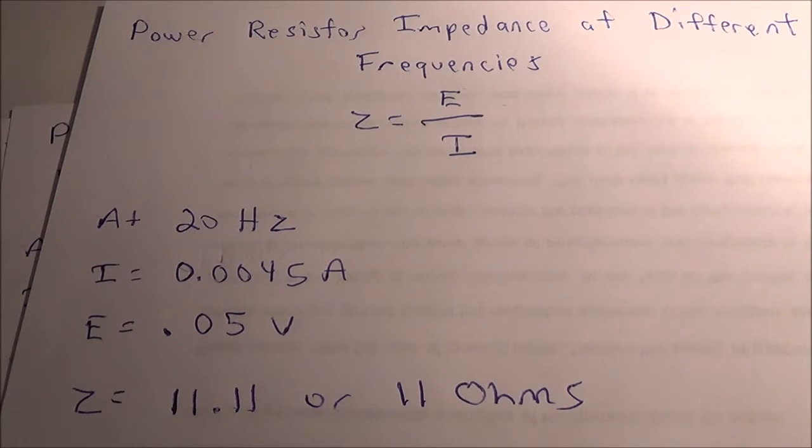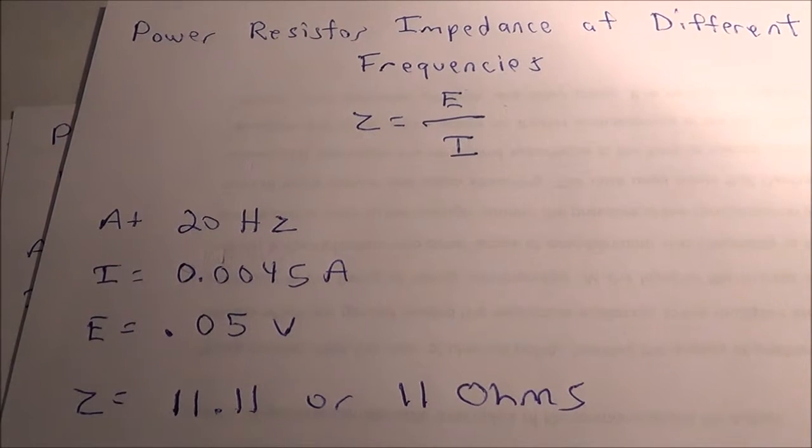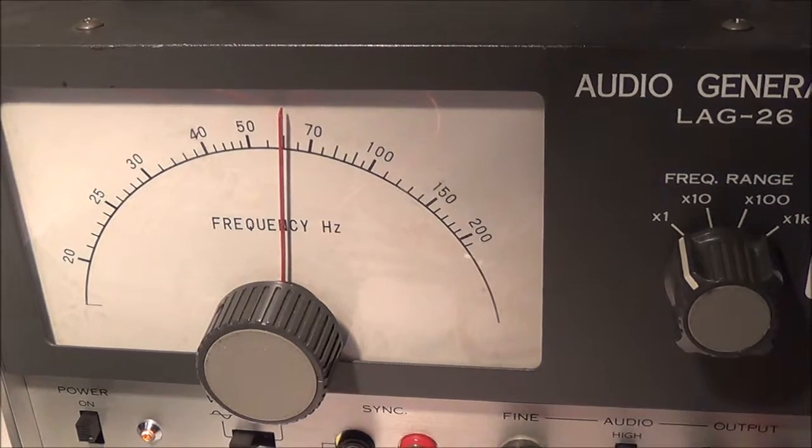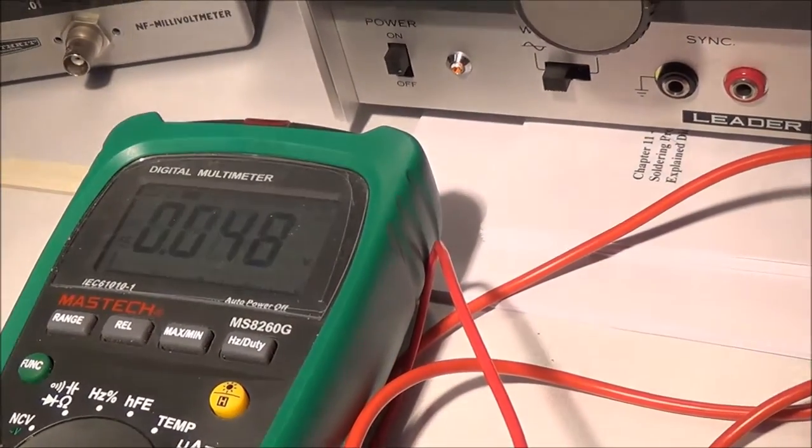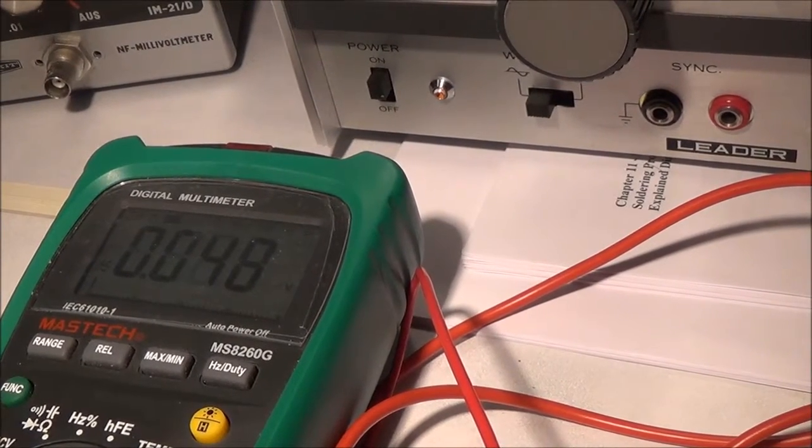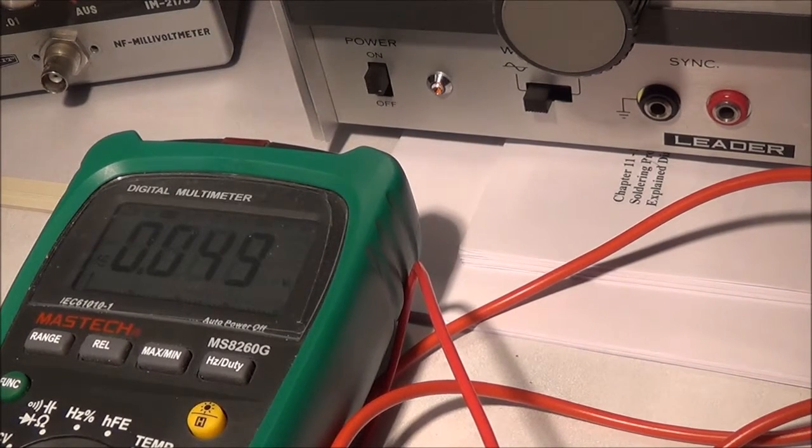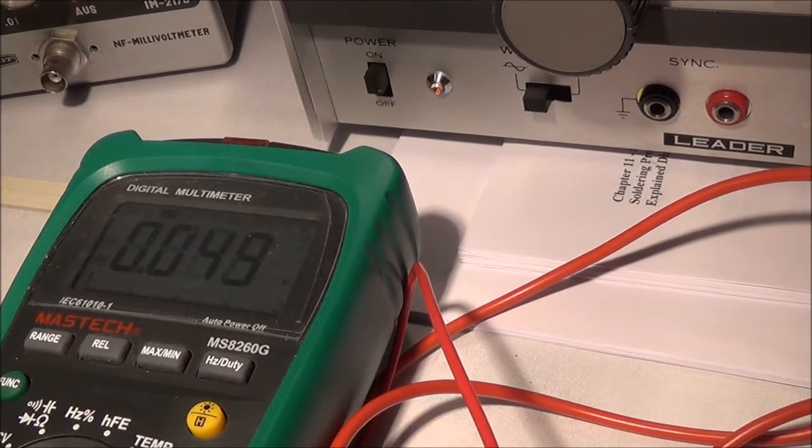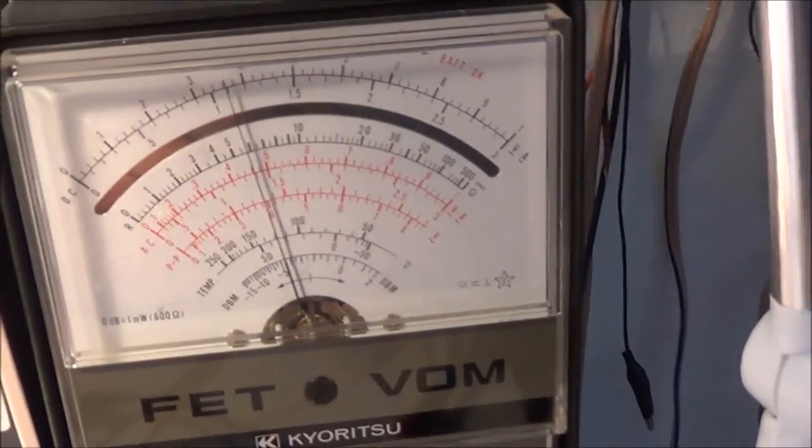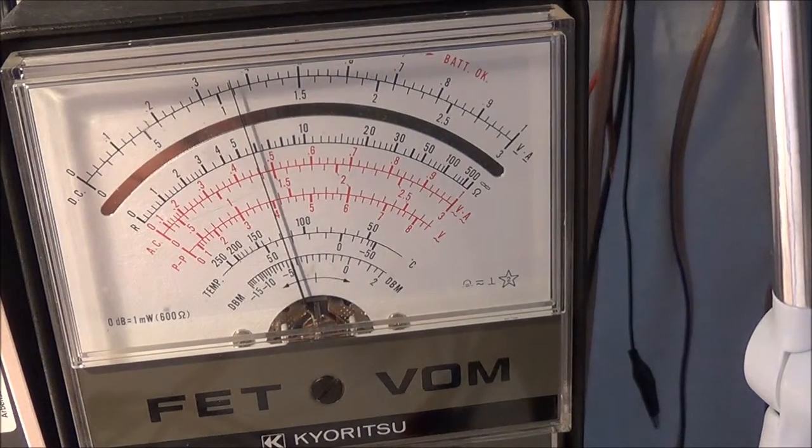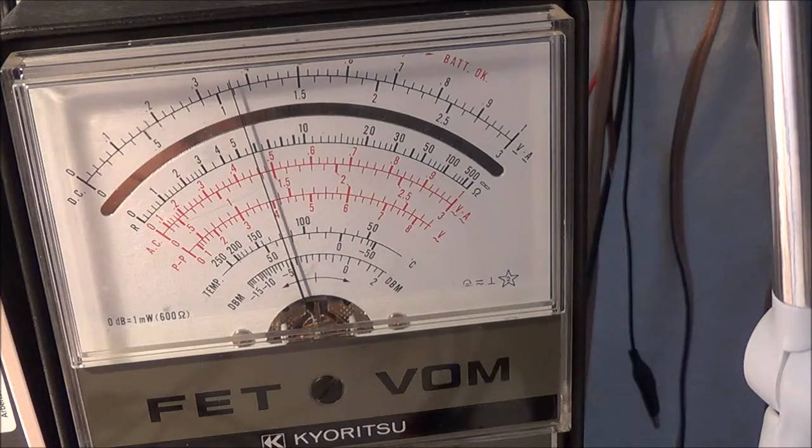Now I'm going to try 60 hertz. I have my audio generator set to 60 hertz now, and the multimeter is showing a voltage of 0.048 volts (48 millivolts). It's swinging back and forth a little bit, so I'm going to leave it at 0.048 volts. The AC ammeter is showing about 4.6 milliamperes.